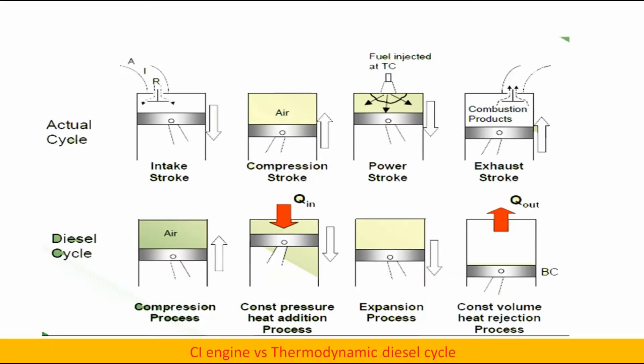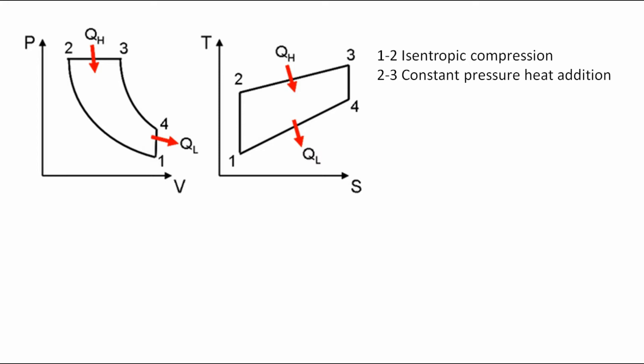Next, let us discuss CI engine versus thermodynamic diesel cycle and derive relation for efficiency. 1 to 2 is isentropic compression and 2 to 3 is constant pressure heat addition, 3 to 4 is isentropic expansion, 4 to 1 is constant volume heat rejection.